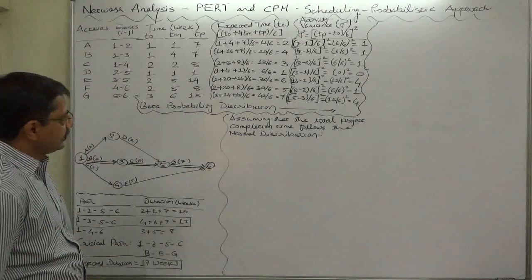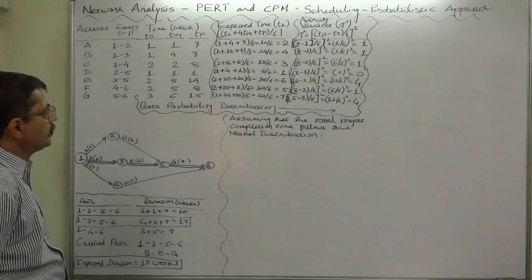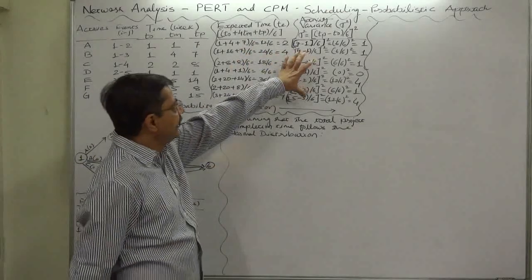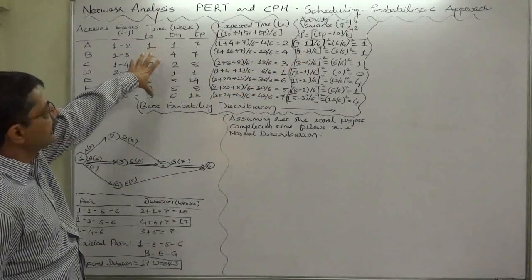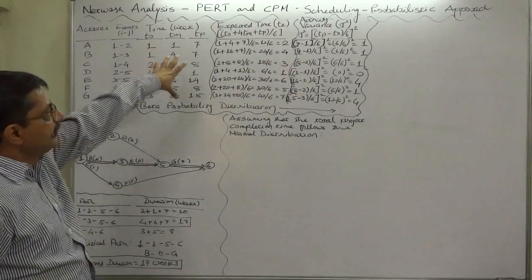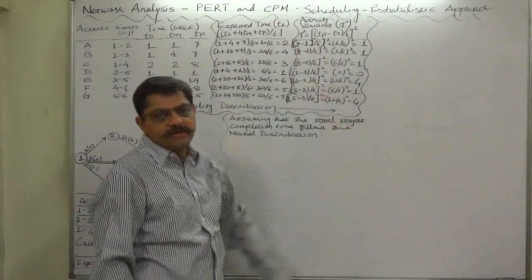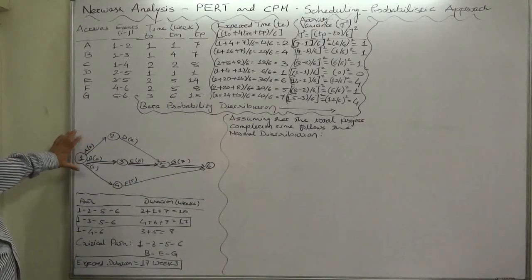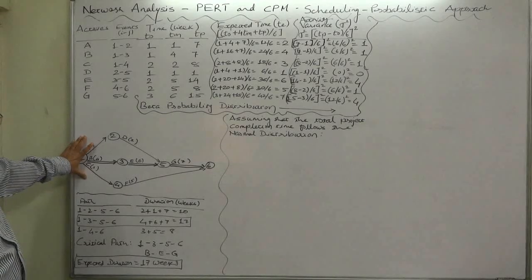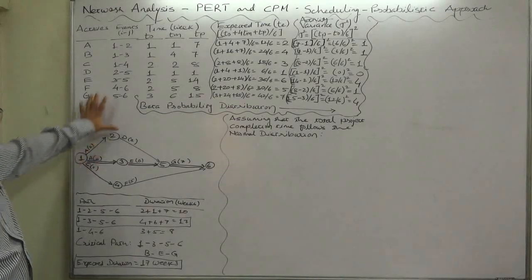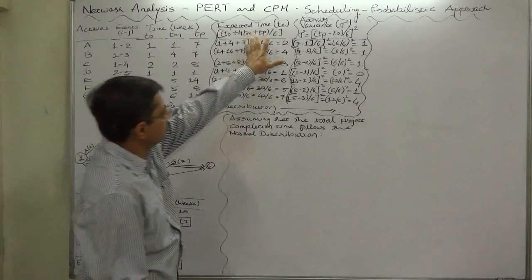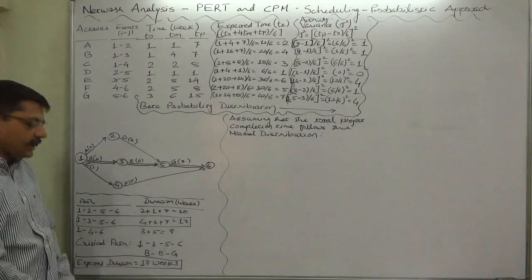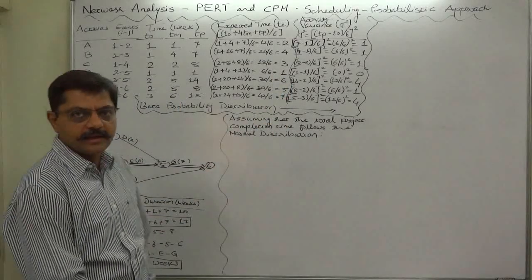In the previous two lectures, we tried to learn the concepts of expected time as the weighted average of these three times, and also the activity variance. We also drew the network diagram for this project on the basis of this expected time, and also determined the critical path and recognized the critical activities.